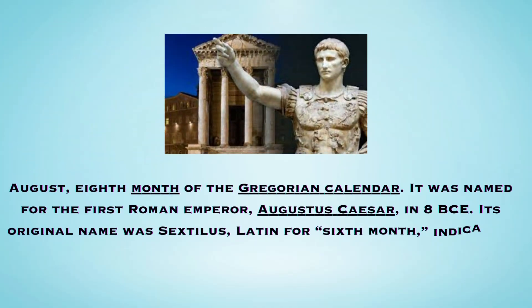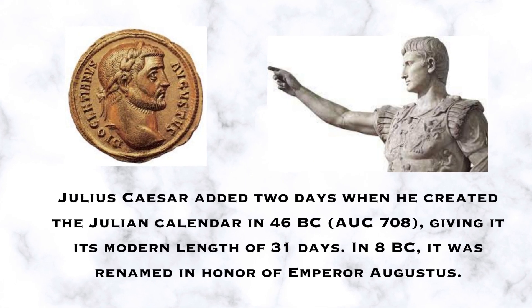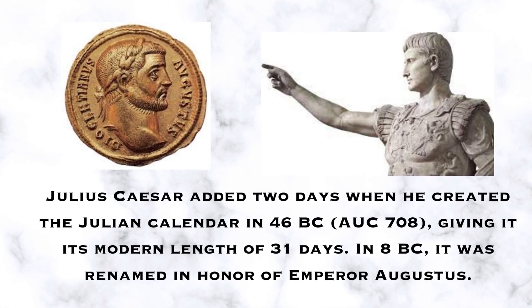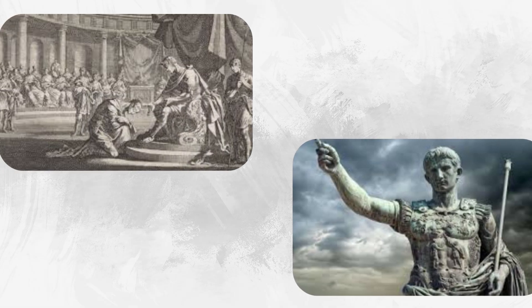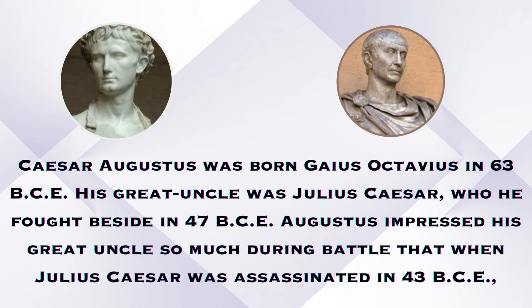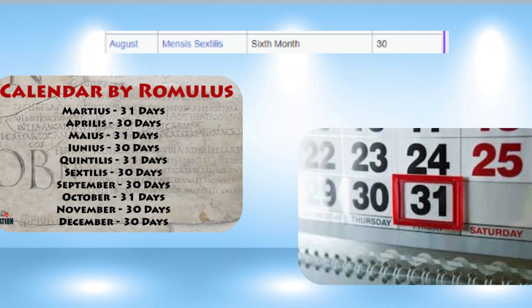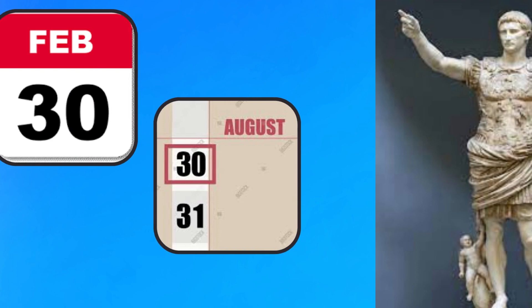In August, there was a dispute. In July, there were 31 days. August was an ego issue — where did August get 31 days? There were 31 days before assigned to July. August is the 6th or 8th month, and being an even month, it should have 30 days. But it was given 31 days.